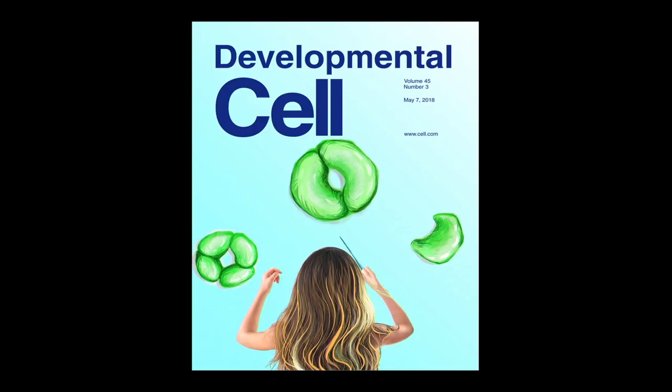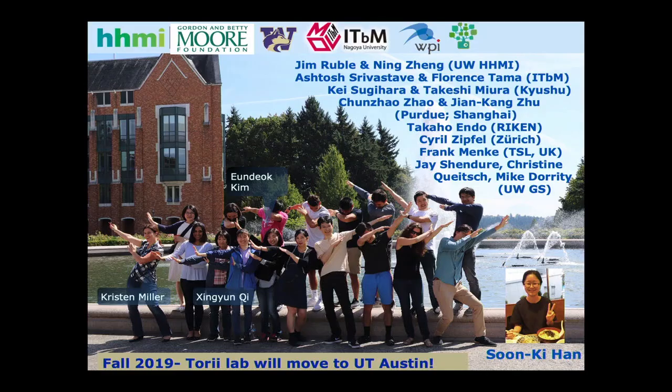I just wanted to show you this — it was published earlier this year in Developmental Cell. I drew this cover myself: my daughter disguising as MUTE, orchestrating the symmetric division so that the stomata is made with just a single symmetric division under this regulation. I would like to thank my lab members, especially Sunki Han who drove this project, as well as Shin Yun Ki, Kristen Miller, and Undok Kim, who helped finish up this story. Thank you.